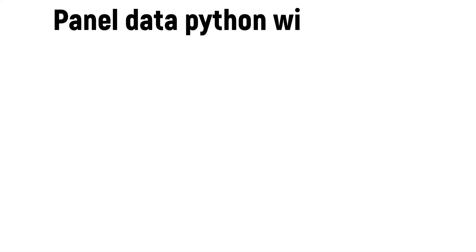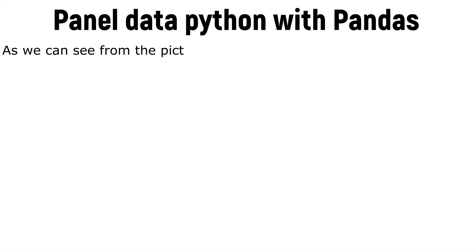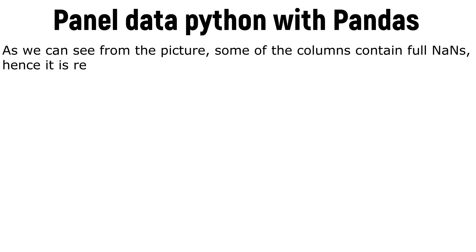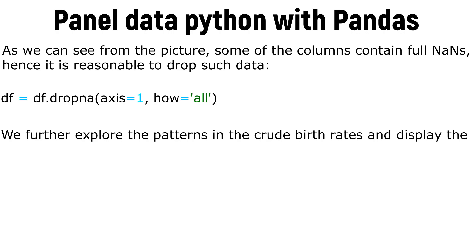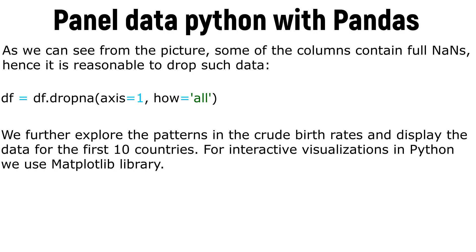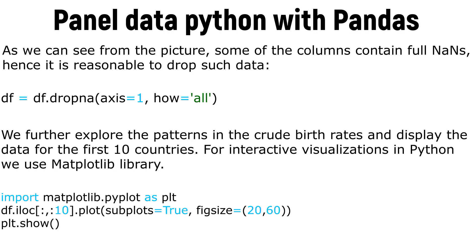Panel Data Python with Pandas: As we can see from the picture, some of the columns contain full NaNs, hence it is reasonable to drop such data. We further explore patterns in the crude birth rates and display data for the first 10 countries. For interactive visualizations in Python we use the matplotlib library.